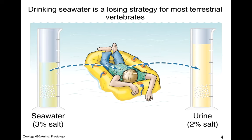If the maximum urine concentration you can produce is 2% salt but seawater is 3.5% salt, then the urine you produce is maximally at 2%, so in order to produce that urine you're drawing water from your body — actually getting more dehydrated the more seawater you drink. So it's a losing proposition.